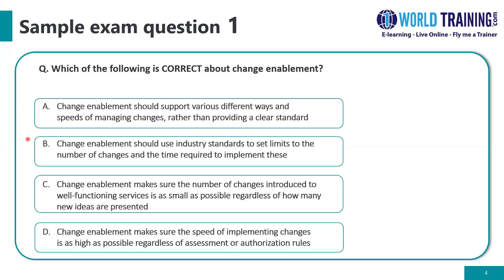Option B: change enablement should use industry standards to set limits to the number of changes and the time required to implement these. Option C: change enablement makes sure the number of changes introduced to well-functioning services is as small as possible regardless of how many new ideas are presented. And option D: change enablement makes sure the speed of implementing changes is as high as possible regardless of assessment or authorization rules.